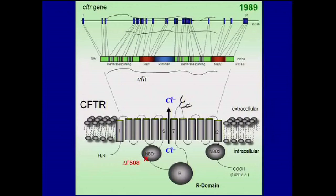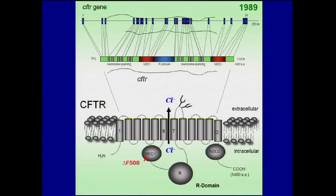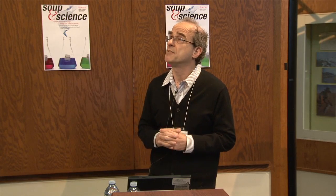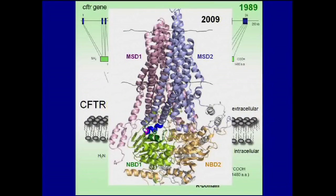CFTR is a polytopic membrane protein, as illustrated in this figure, with five major domains. The most prevalent mutation, delta-F508 — a deletion of a single amino acid identifiable in 90% of patients — is also indicated, shown in purple at a critical location in the predicted three-dimensional structure of the molecule.